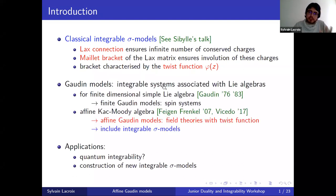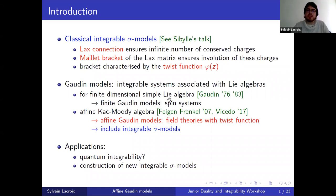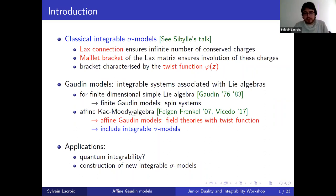Gaudin models in general are integrable systems associated with certain Lie algebras, and they were historically introduced by Gaudin for the case where the Lie algebra is a finite dimensional simple Lie algebra, giving what we call finite Gaudin models, which are integrable spin systems and quite well understood in the literature. Today I'd like to talk about a slightly different type — the affine ones — which correspond to the case where the underlying Lie algebra is a so-called affine Kac-Moody algebra.